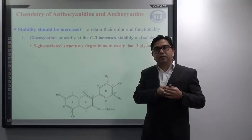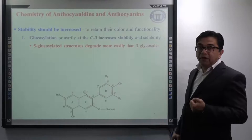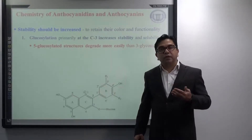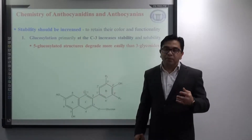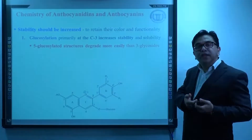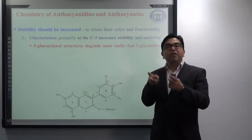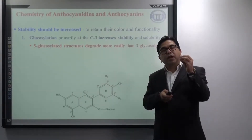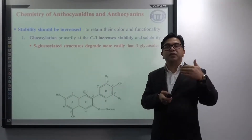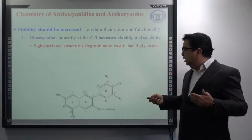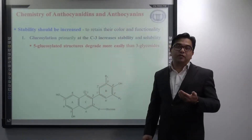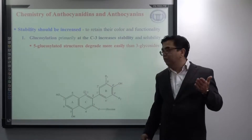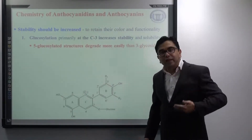Can you correlate this with the previous lecture? We discussed that 3-glucosylated anthocyanins are more available in nature compared to 3,5-diglucosylated anthocyanins, and glycosylation at ring B is possible but rare. The reason is that glycosylation at the third position increases the stability of anthocyanin, which is why 3-glycosylated products are more available in nature compared to 5-glycosylated or 3,5-diglycosylated products.